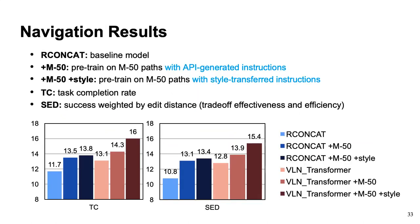We introduce a new navigation model: the VLN Transformer. We use a BERT-based instruction encoder to generate embeddings for each sentence in the instruction, and a CNN-based view encoder to obtain visual features for the visual views at every time step. Then a cross-modal transformer fuses all features from different modalities and jointly encodes instructions and trajectory. We compare the VLN Transformer with the baseline concat model on the Touchdown dataset.